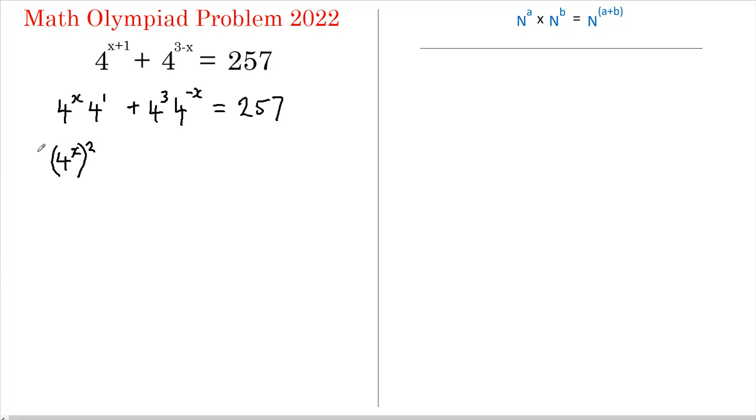We've still got this 4, I'm going to put that at the front, plus 4 cubed is 64 and this now becomes 4 to the negative x multiplied by 4 to the x. All equals 257 multiplied by 4 to the power of x.